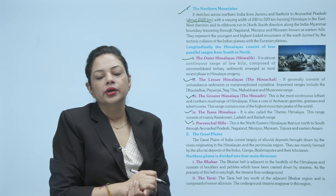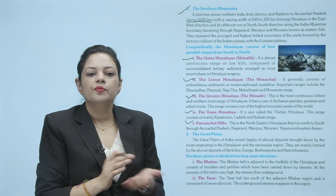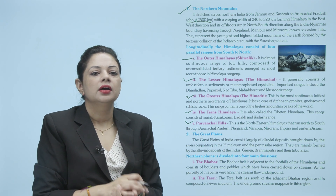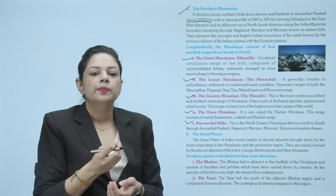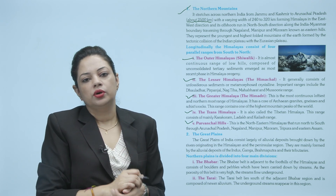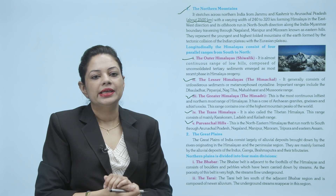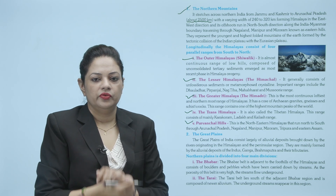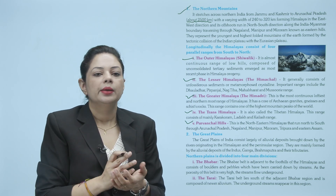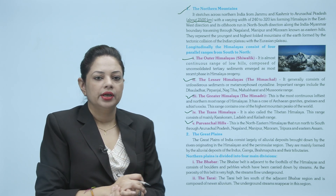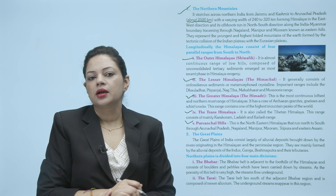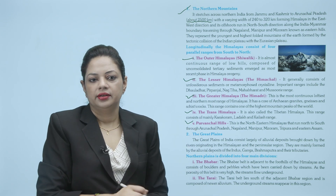Aur Purvanchal Hills — yaani ki poorav mein hain, east mein hain — like Arunachal Pradesh, Nagaland, Manipur, Mizoram, Tripura, aur eastern Assam — wahaan jo hills faili hui hain, Himalayas ka jo part hai, unko Purvanchal Hills mein count kiya gaya hai.